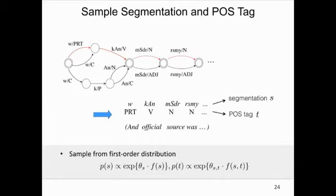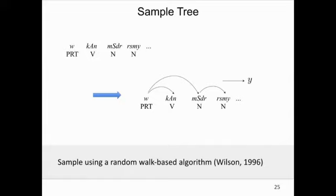Using Arabic as a running example: in the first step, given the sentence, we randomly draw a sample of segmentation and POS tags from the search space. We use the lattice structure to represent the search space. We sample from the first-order distribution, proportional to the exponential of the feature score. Given the segmentation and POS tags, we then randomly sample a dependency tree Y from the first-order distribution using the Wilson algorithm, which incrementally constructs the sample based on a random walk procedure.